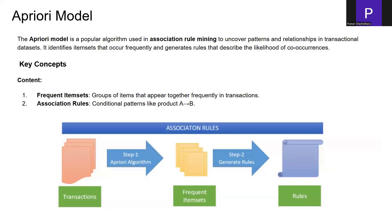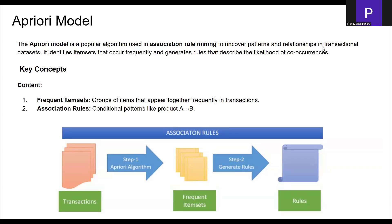The Apriori model is a popular algorithm used in association rule mining to uncover patterns and relationships in transactional data. It identifies item sets that occur most frequently and generates rules describing the likelihood of co-occurrences. A key concept is frequent item sets — essentially the frequency of items occurring together.